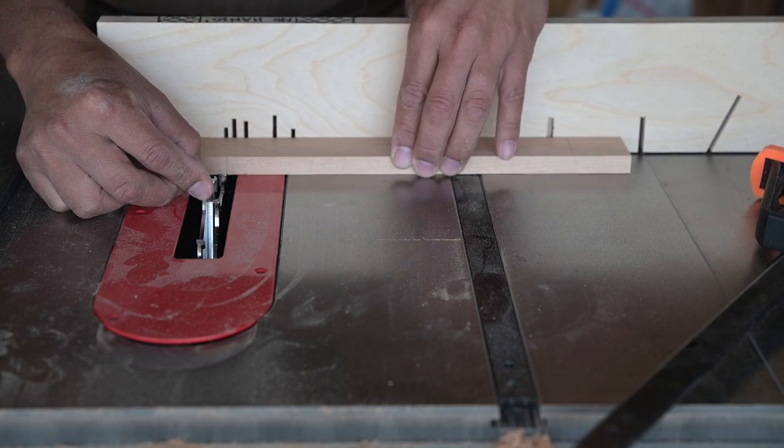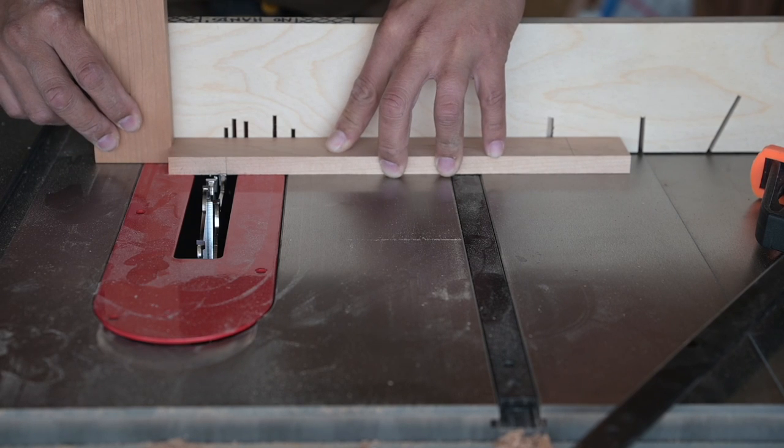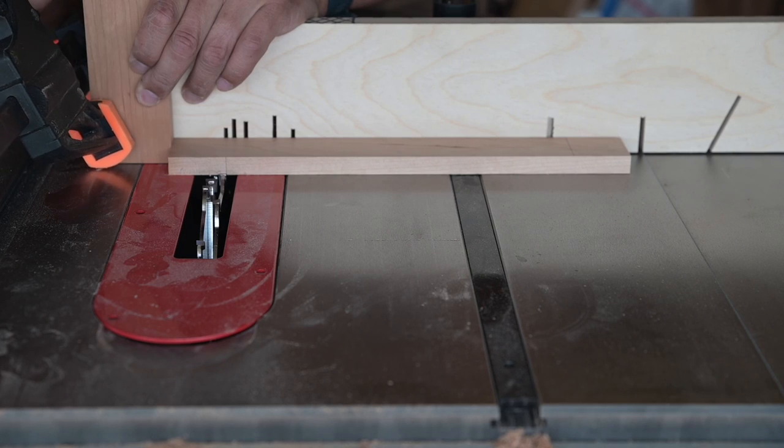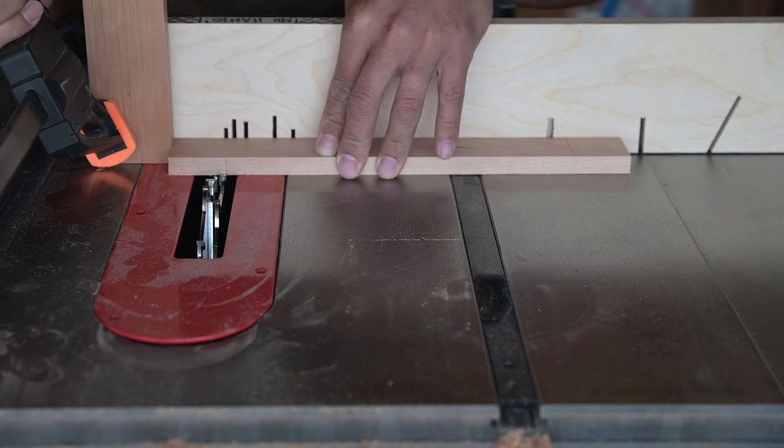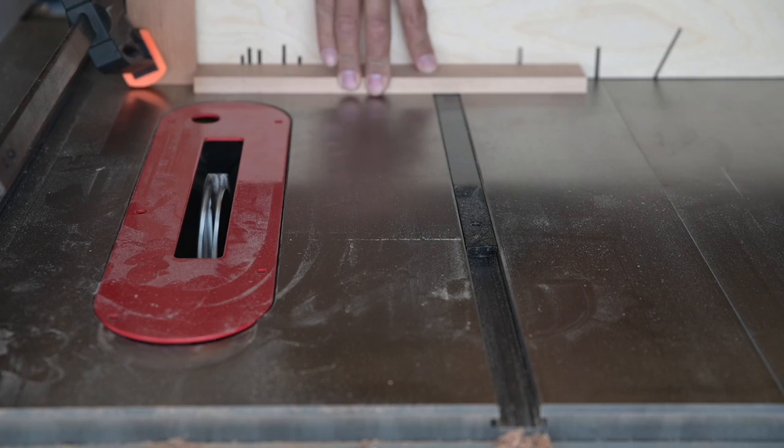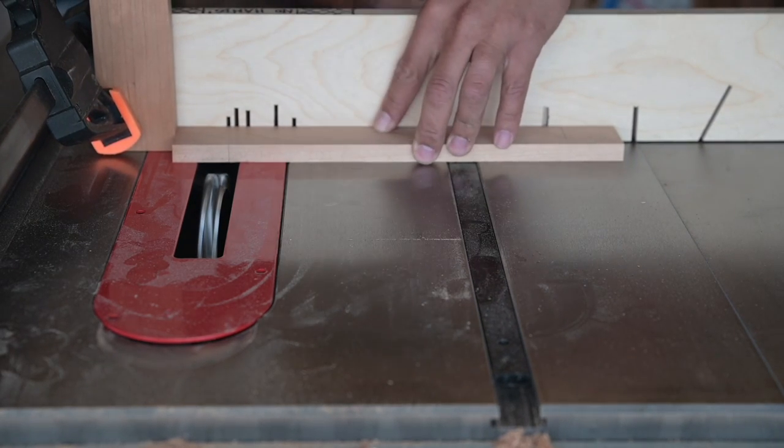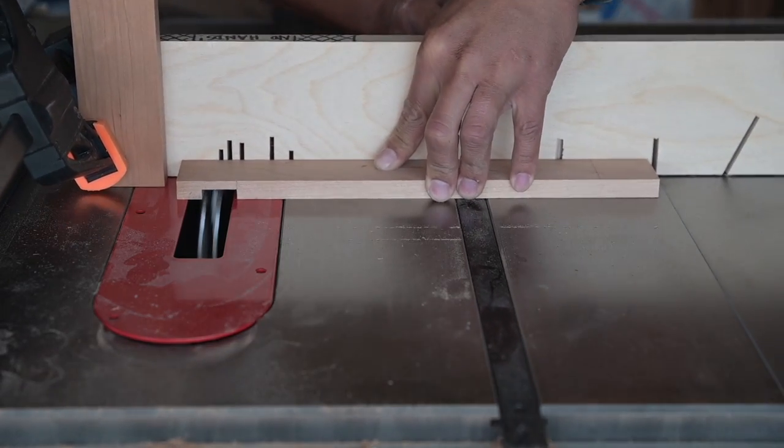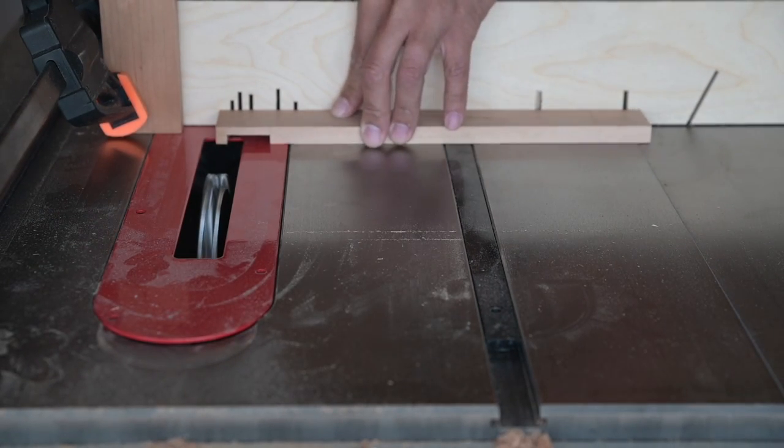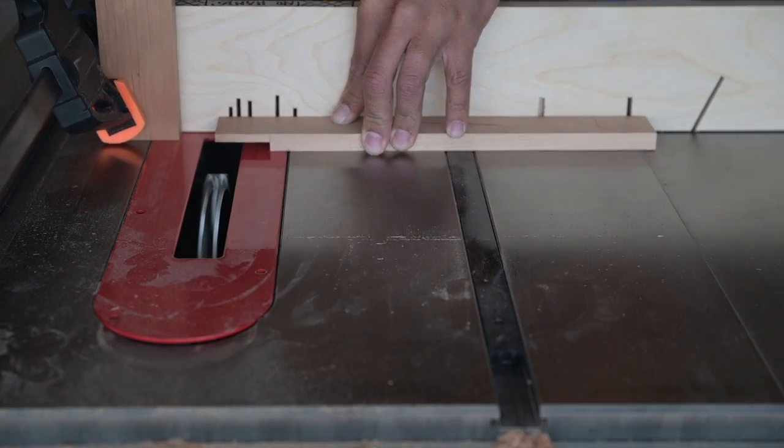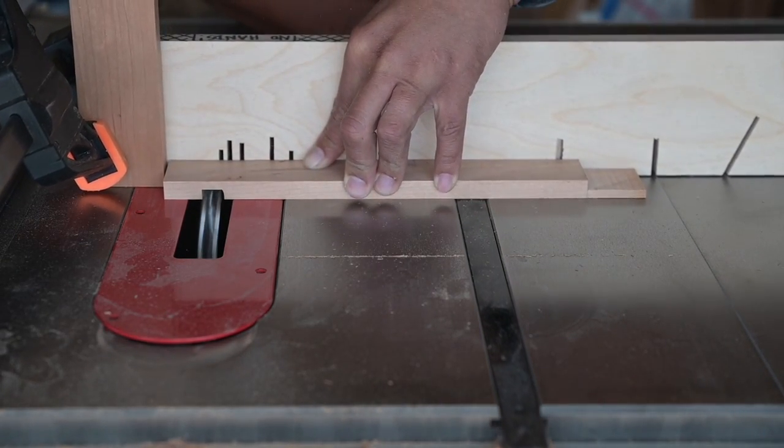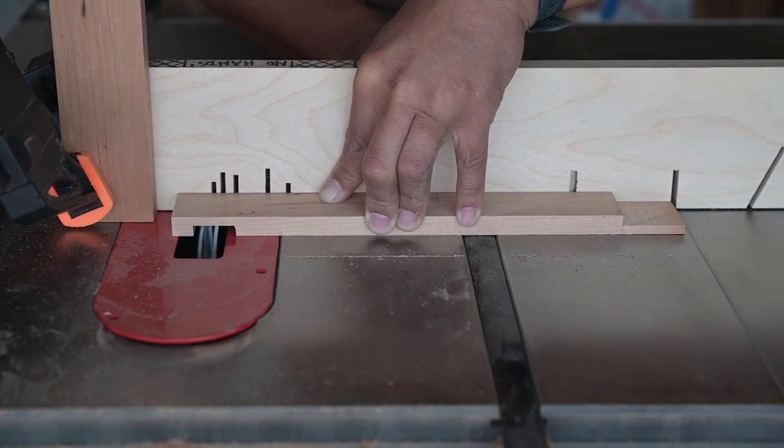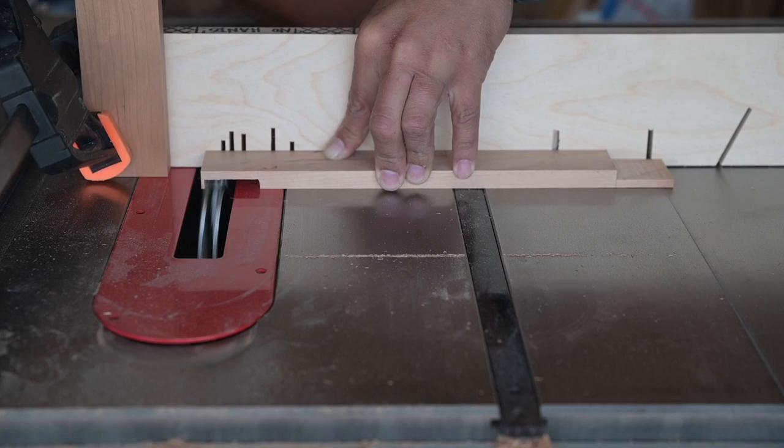And now this is my fancy new dado stack and I figure it's time to set up a stop block so that I can have some repetitive cuts. On the cross pieces here, I have to put, I guess these aren't dados, these are rabbits on the end of my cross pieces that are the same dimensions all the way across and on both ends. So I'll do this cut four times because there are two pieces and they each have two ends, that's why.